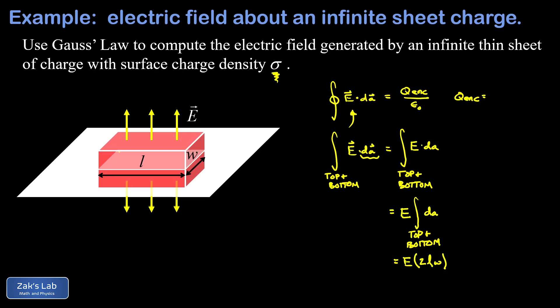We have this little section of area that's length times width enclosed inside of the box and that enclosed charge is given by our area charge density multiplied by the area which is just L times W.